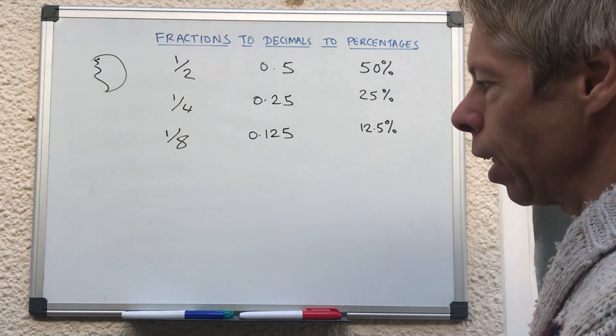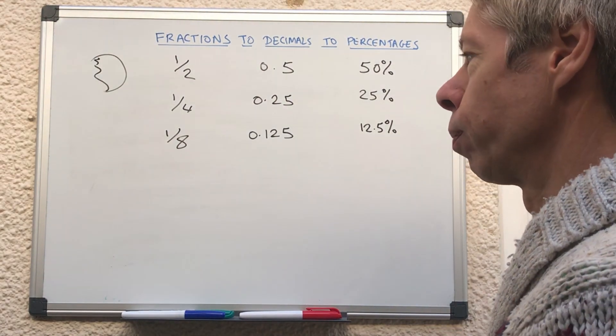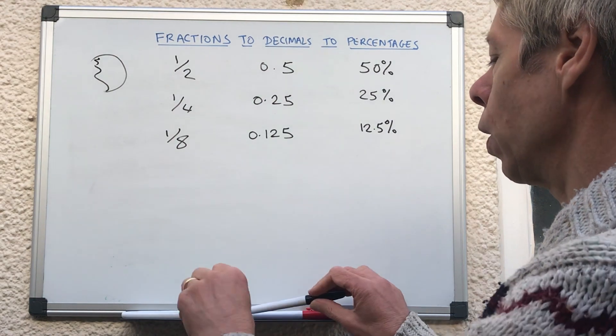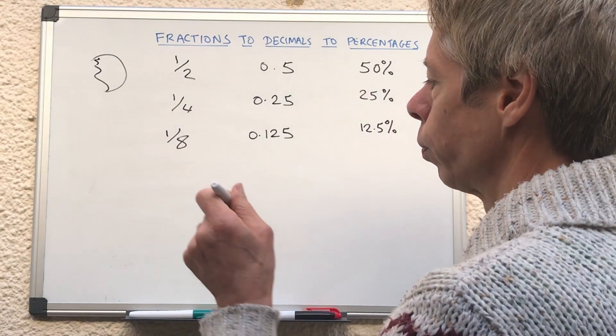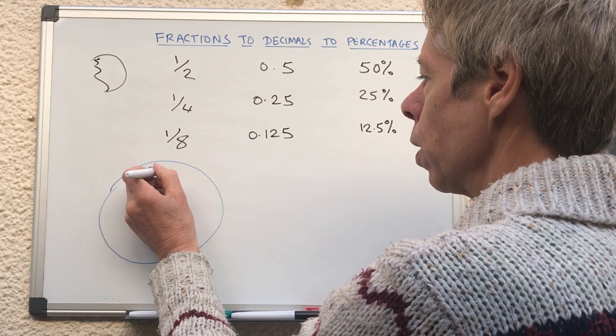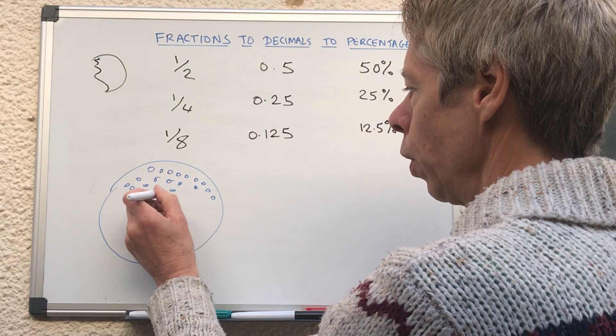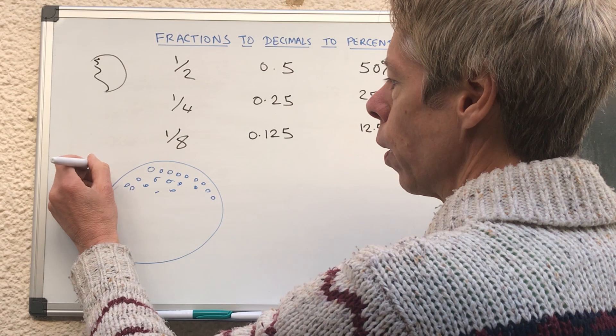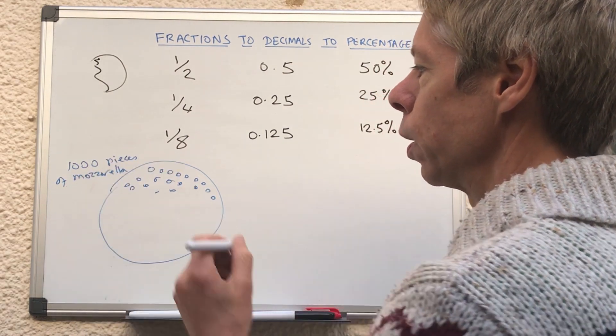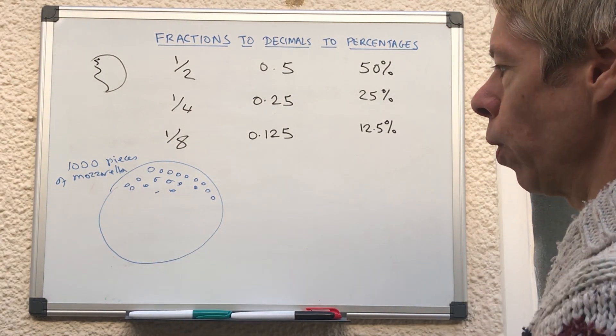But there is a sneaky way of, if you can remember little stories rather than remembering numbers which don't seem to relate to anything, there is a way of doing this. So imagine you've got an enormous pizza. This pizza is so big it's got 1,000 pieces of mozzarella on it. So we're talking a big pizza. I'm not going to draw them all in. So it's got 1,000 pieces of mozzarella on it.